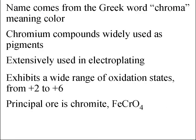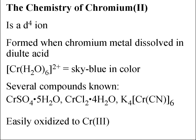The name for chromium comes from the Greek word chroma meaning color, from the fact that chromium compounds are widely used as pigments. Chromium is widely used in electroplating. It exhibits a wide range of oxidation states from +2 up to +6, and the principal ore is chromite, FeCrO₄.